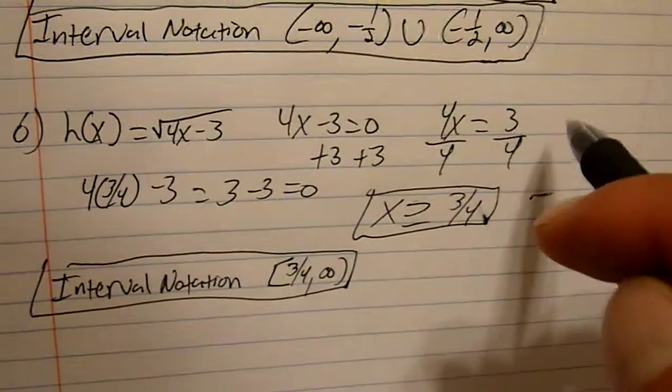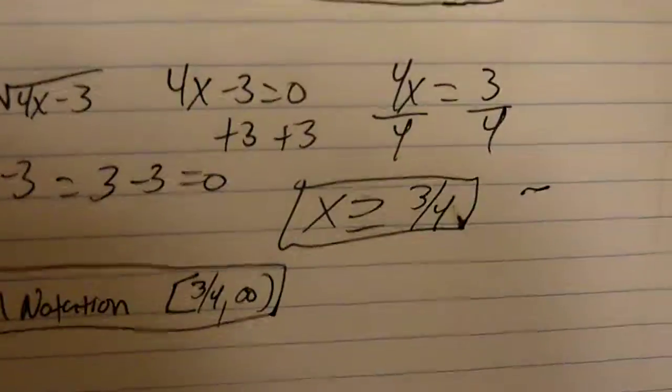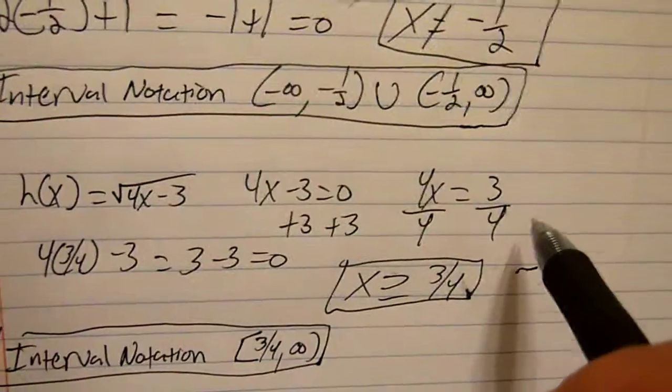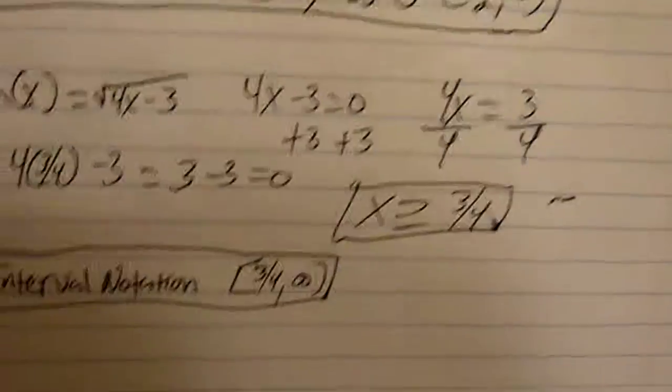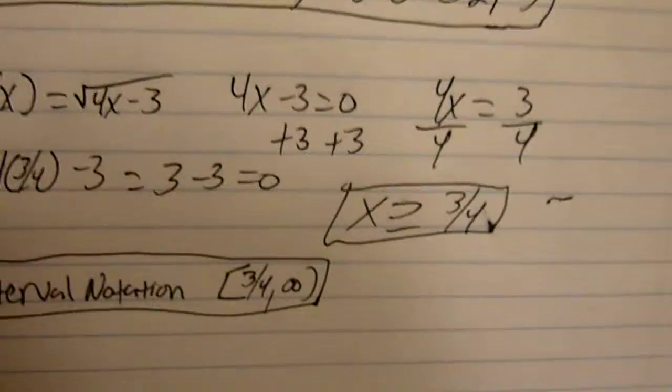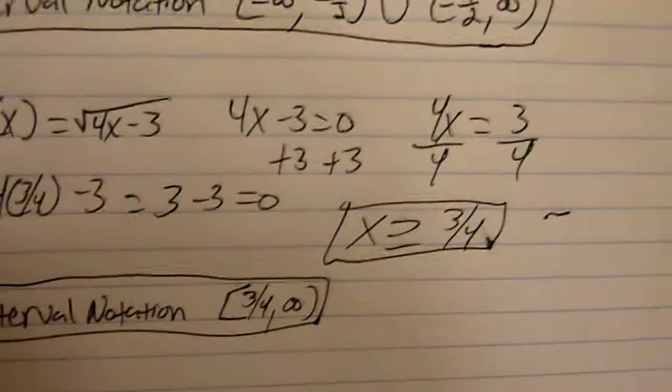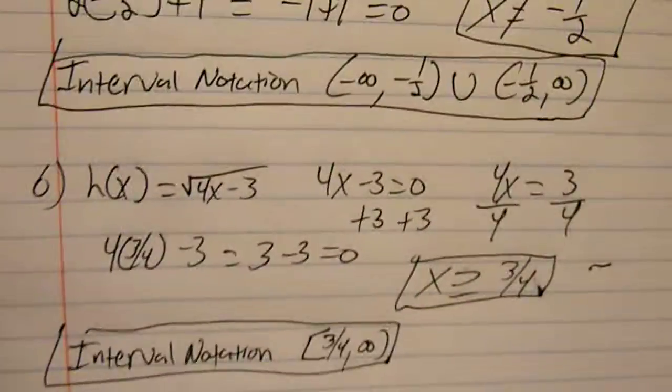4x is equal to 3. Divide both sides by 4. Once you divide both sides by 4, you're going to get 3 fourths. Now, 3 fourths is included underneath the radical, so x is greater than or equal to 3 quarters. Plug it back into the equation. You see that it does equal 0. So that's your answer.